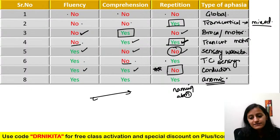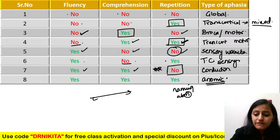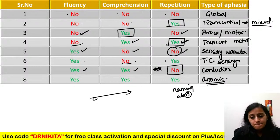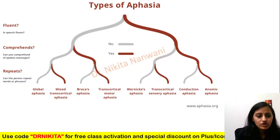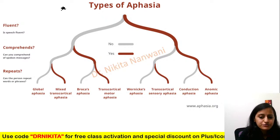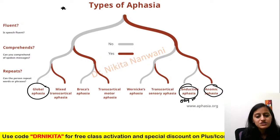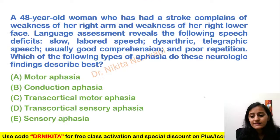So to summarize the types: global is everything gone; anomic is only naming affected; conduction aphasia has only repetition abnormal; the first thing to check in a clinical question is repetition — that decides whether it is transcortical or not. Transcortical aphasia preserves repetition; the others do not.